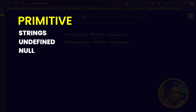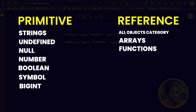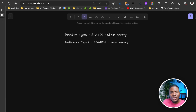Apart from strings, which have static values, other primitive data types that have static values are: undefined, null, number, boolean, symbol, and bigint. For reference data types, all data types that fall under the object category fall under the reference type — arrays fall under object, functions fall under object, and objects fall under object.